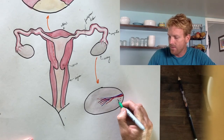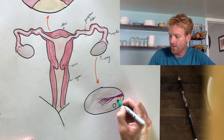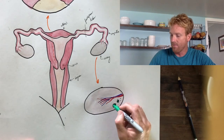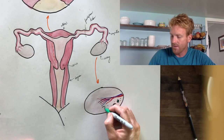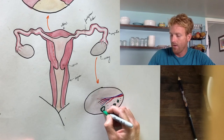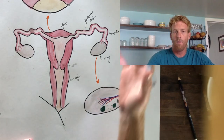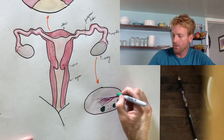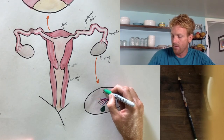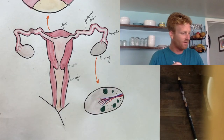In the ovary there are going to be follicles in various stages of development. The larger follicles are ones that are developing and getting ready for ovulation. The smaller follicles are the ones that are not developing — it's not their turn. During each month there are about five or six different follicles developing, even though only one of these eggs is really going to be released.